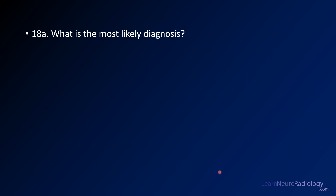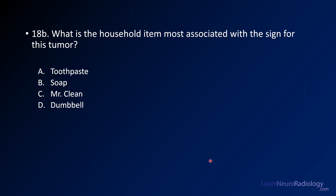Your question is: what's the most likely diagnosis — what do you think this tumor is? And what is the household item most associated with the characteristic sign for this lesion? Is it toothpaste, soap, Mr. Clean, or dumbbell? For those outside the U.S., Mr. Clean is a household cleaner.